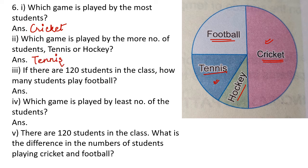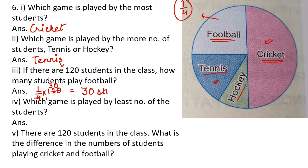If there are 120 students in the class, how many students play football? Football is played by one-fourth of the class, so number of students playing football will be one-fourth of 120. Four ones are 4, four thirties are 120, so the answer will be 30 students.